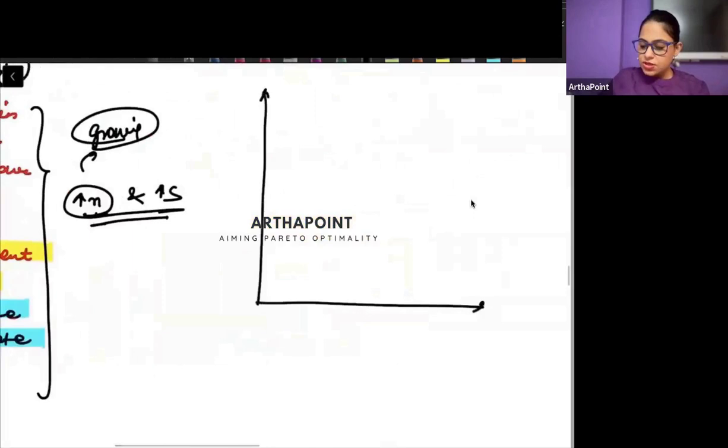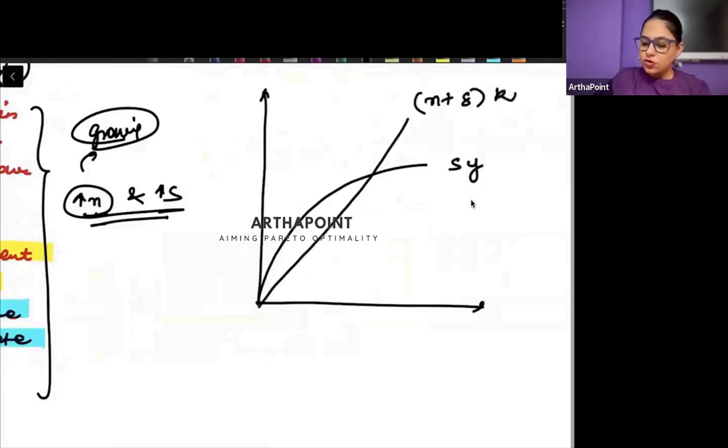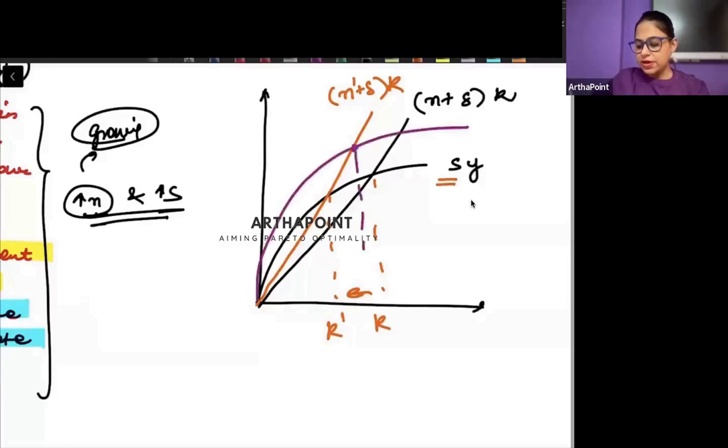For example, suppose initially this is Sy and this is N plus delta K. We know that an increase in population causes a decline in capital. If I want to ensure I have larger capital, I can increase the savings rate. If I increase my savings rate, I will be able to increase my capital again.